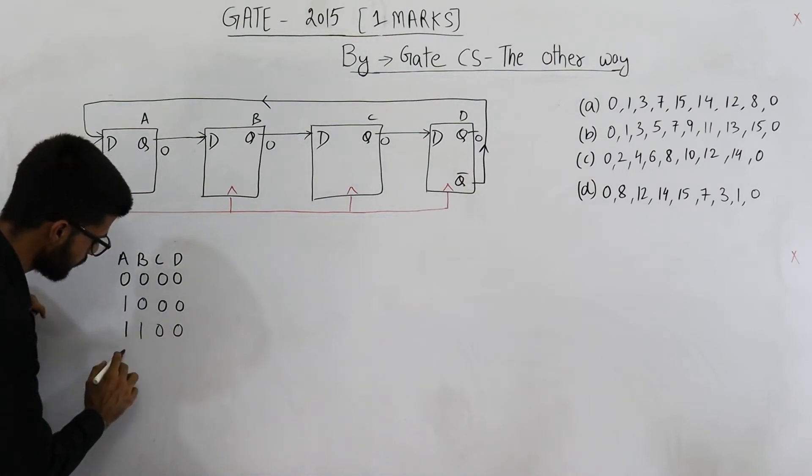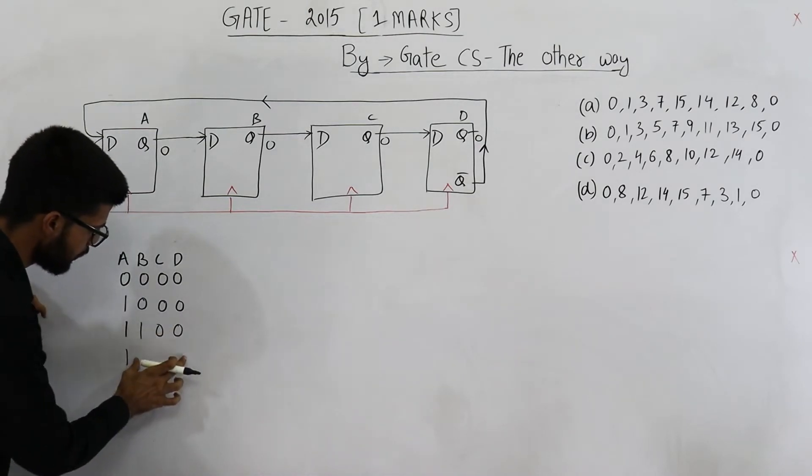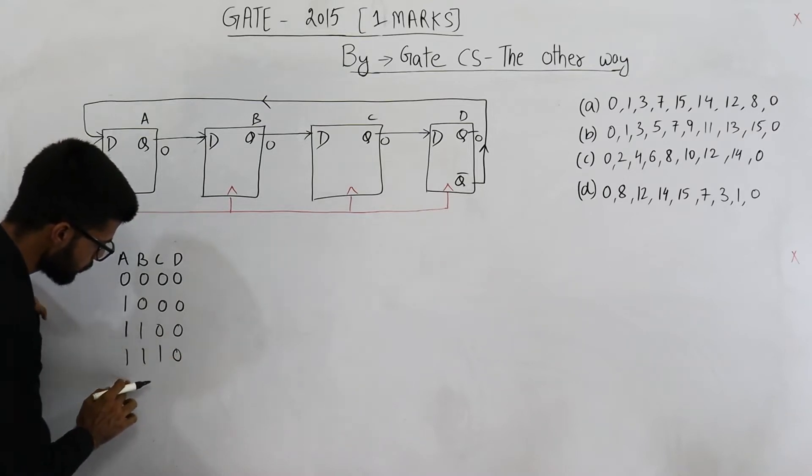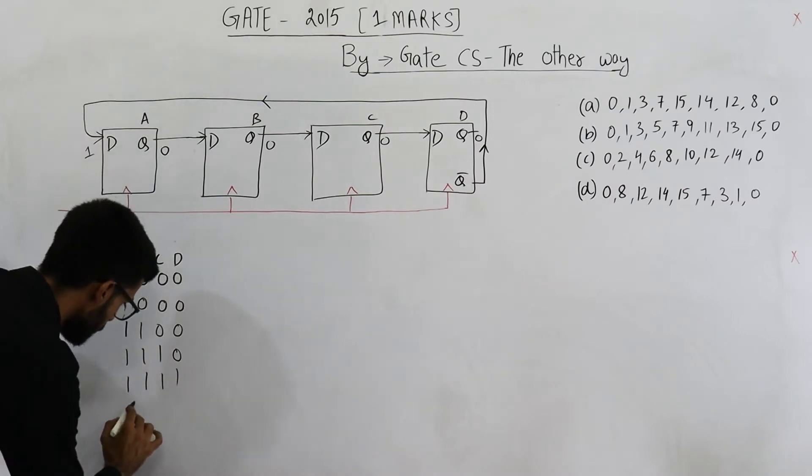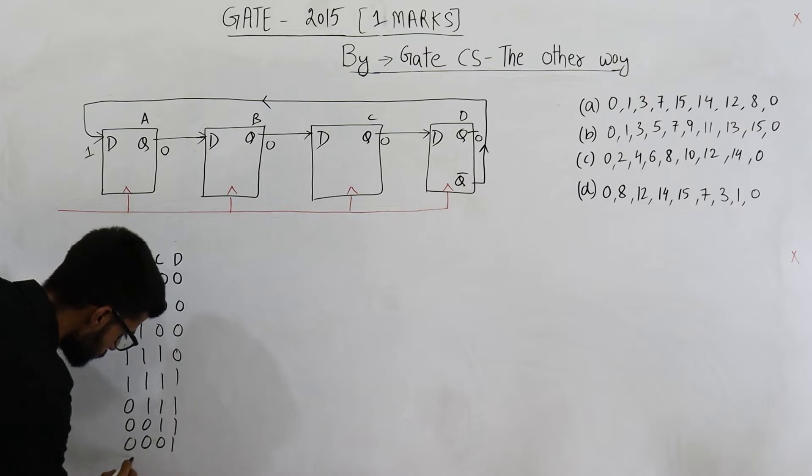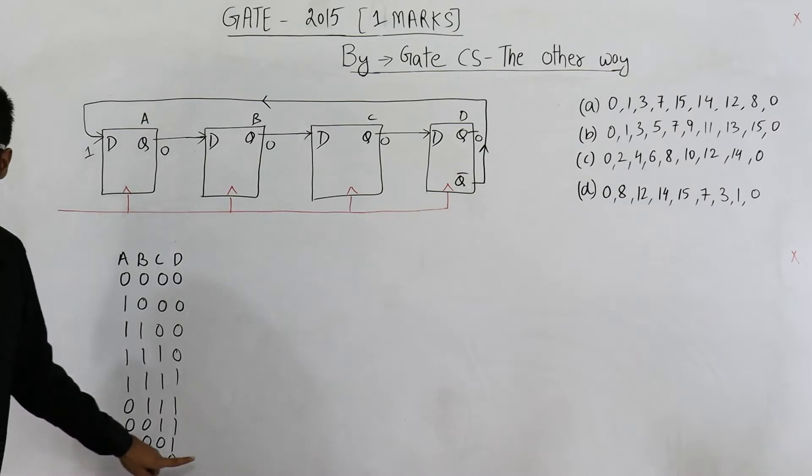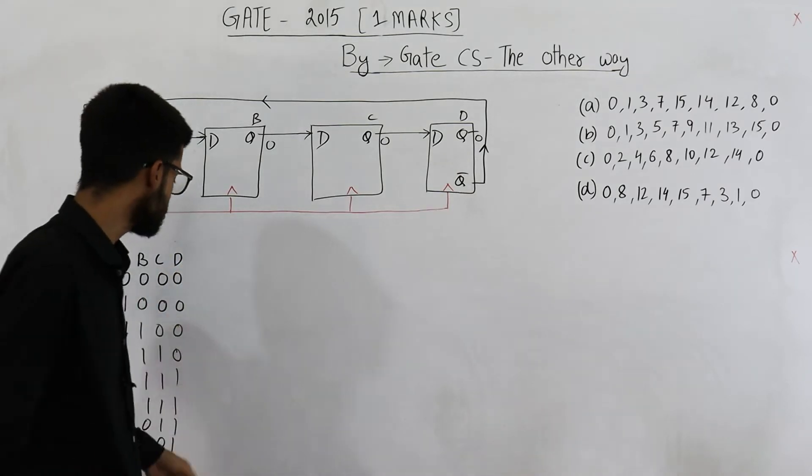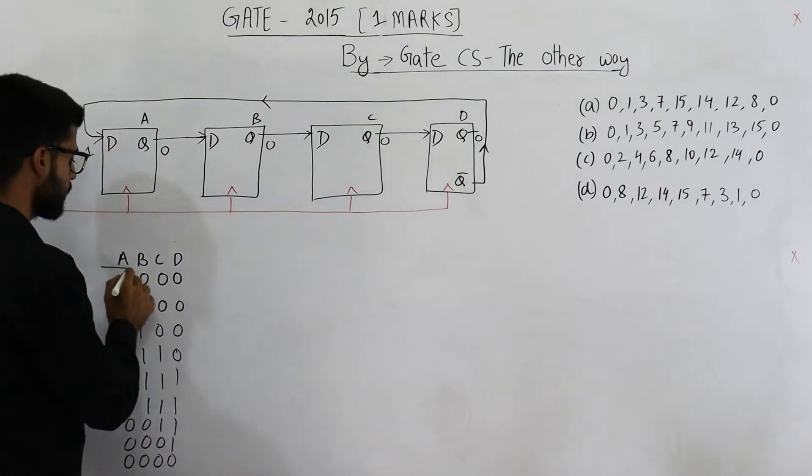Now let me just complete this. See, its complement is to be written here, and these 3 will be shifted here. Its complement is to be written here, and these 3 will shift here. So this is the counting sequence of the given counter.